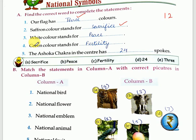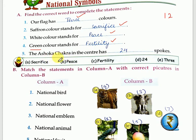White color, which is in the middle, stands for peace. Green color stands for fertility or prosperity. And in the middle there is an Ashoka Chakra. How many spokes does it have? It has 24 spokes.